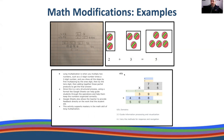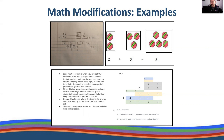Another student made a modification with step-by-step directions for long multiplication and set it up in an Excel spreadsheet with color-coded cells. These modifications use a Universal Design for Learning approach — ways to make things accessible — and would be fairly easy to do quickly in a math class while the teacher is teaching.